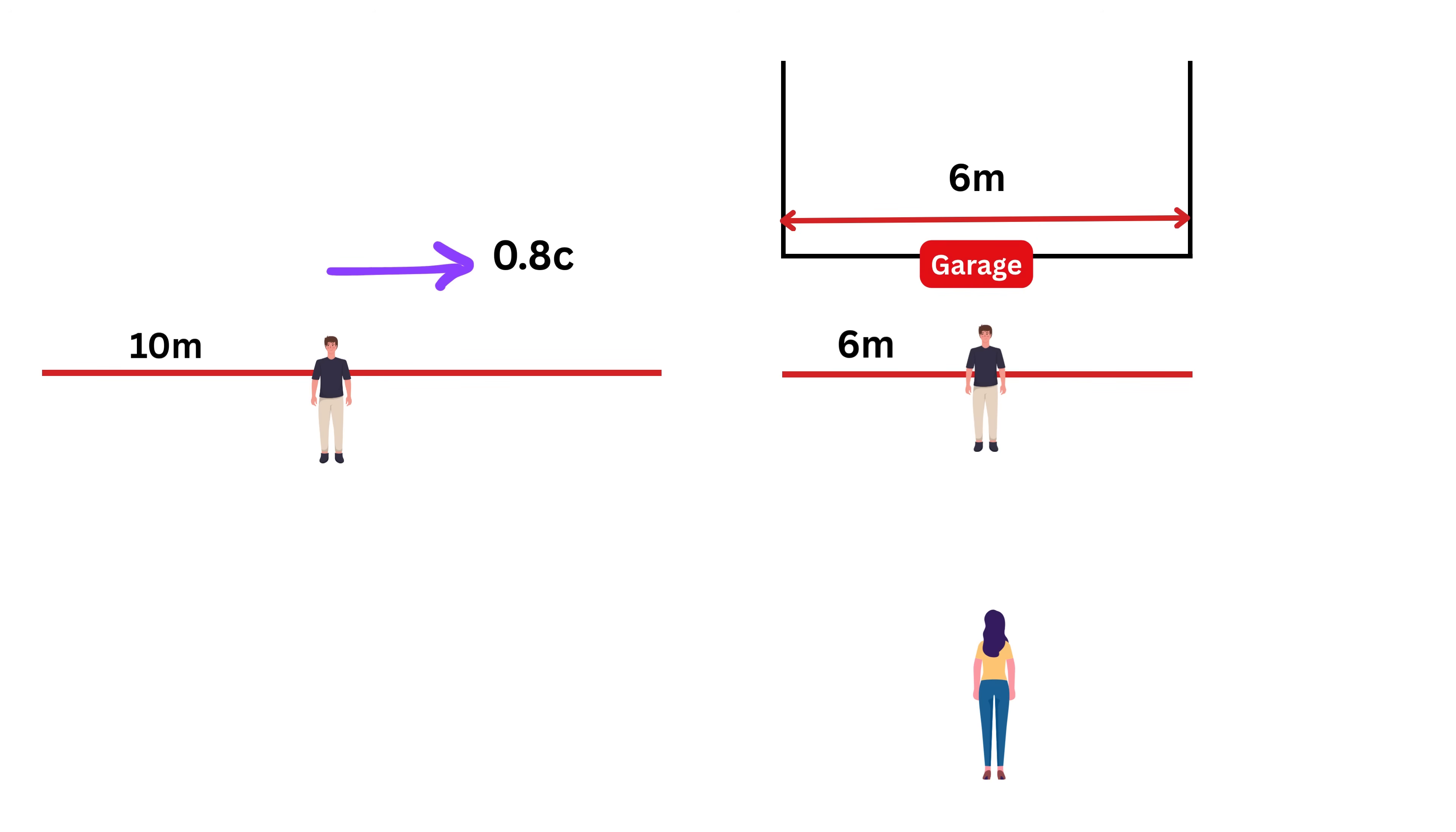Now this is what Alice thinks. At the instant she sees the entire pole inside, she simultaneously closes both garage doors, trapping the entire pole inside, and reopens them quickly so Bob can continue running.